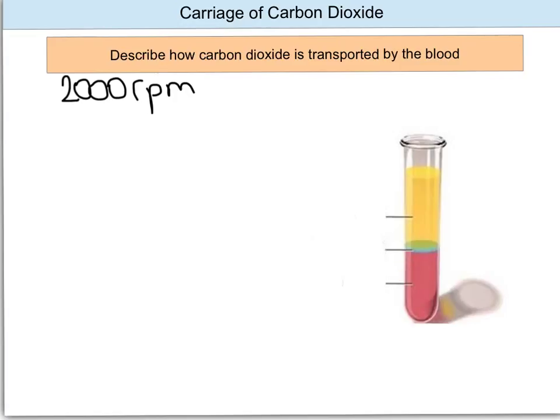The second layer is made of platelets and white blood cells, and there's a very small amount of white blood cells and platelets in the blood. And the final yellowy off-white layer here is blood plasma, which is the liquid containing water and other proteins and hormones inside the blood.